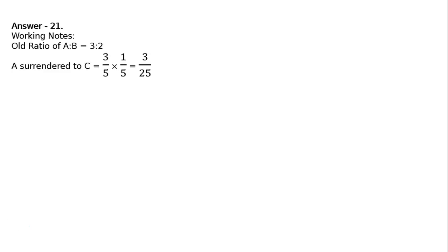Working notes: old ratio of A to B is equal to 3 to 2. A surrendered to C — 3 by 5 was the old share, surrendered one-fifth of his share, that is multiplied by 1 upon 5, which is 3 upon 25.